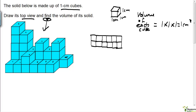So one, two, three, four, five, six, seven, eight, nine, ten, eleven, twelve, and one here — like that. There you go, this is the top view. Now find the volume of the solid.